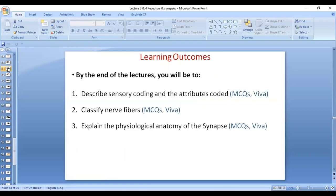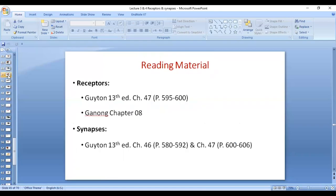By the end of this lecture, you will be able to describe sensory coding and the attributes which are coded by the receptors and by CNS, and you will be able to classify nerve fibers. This is the reading material.